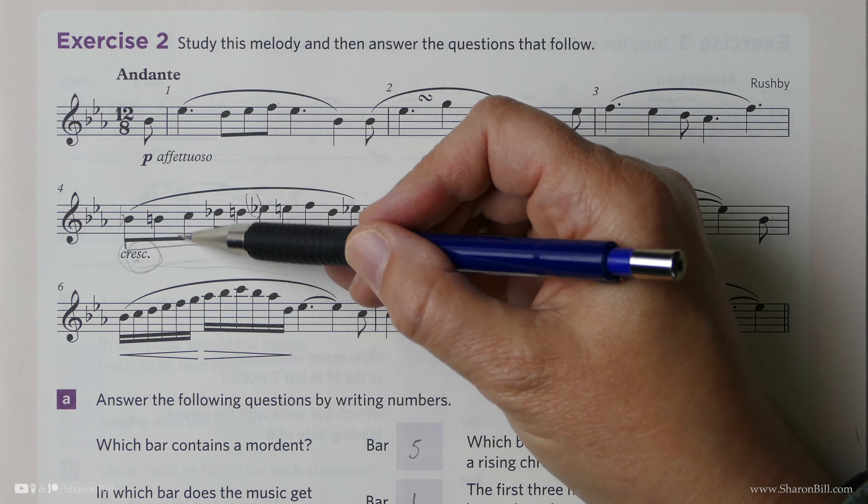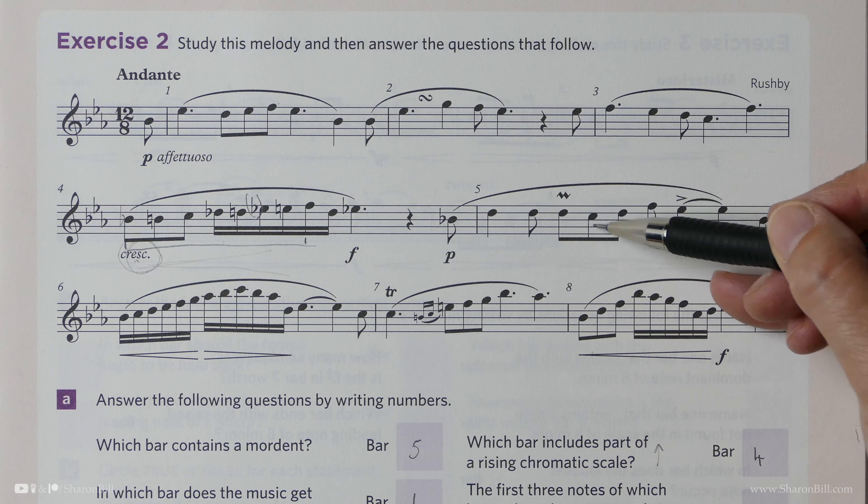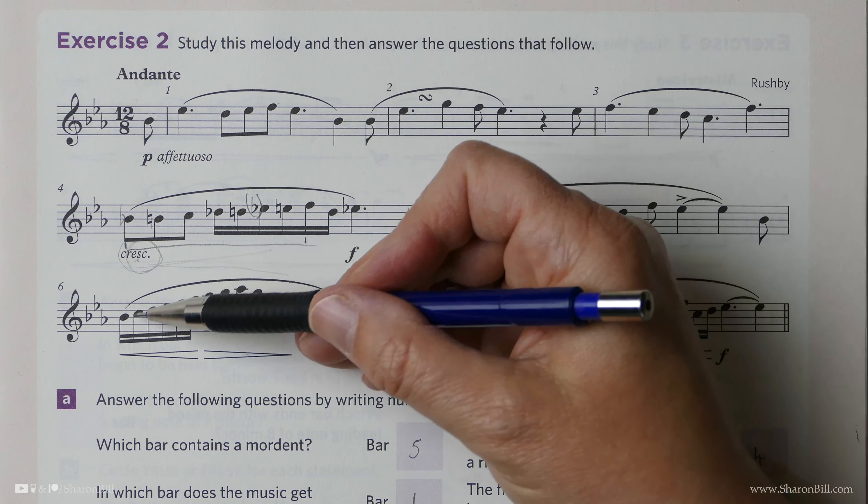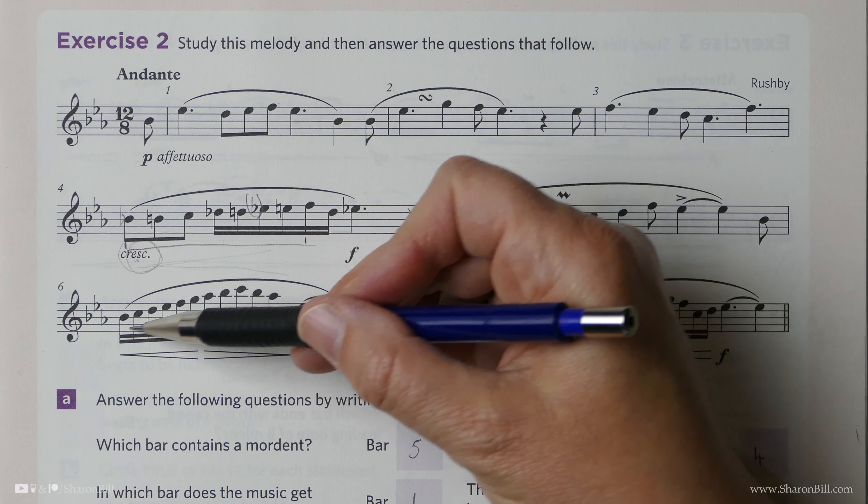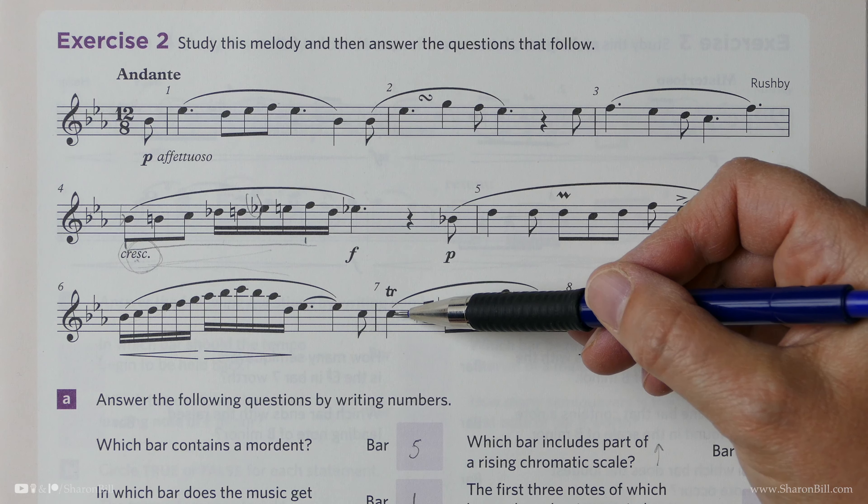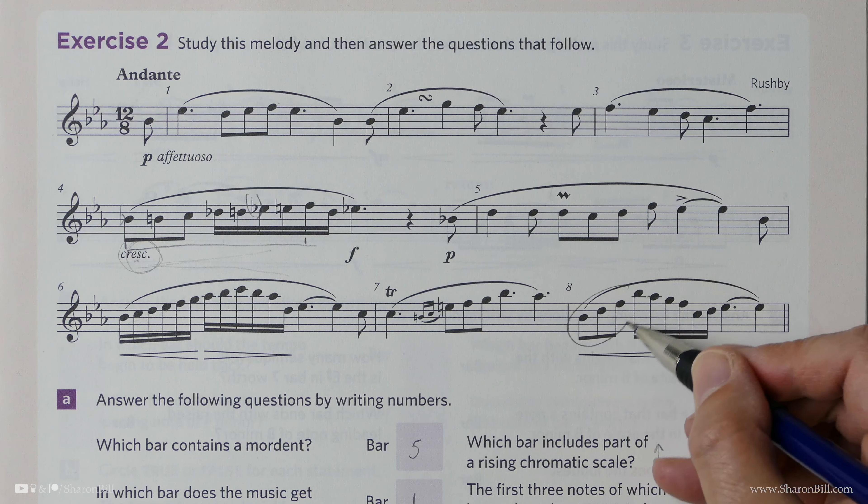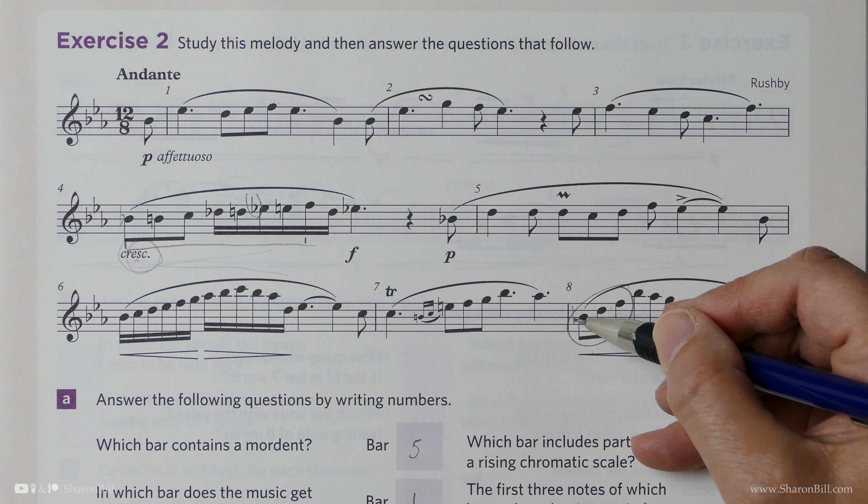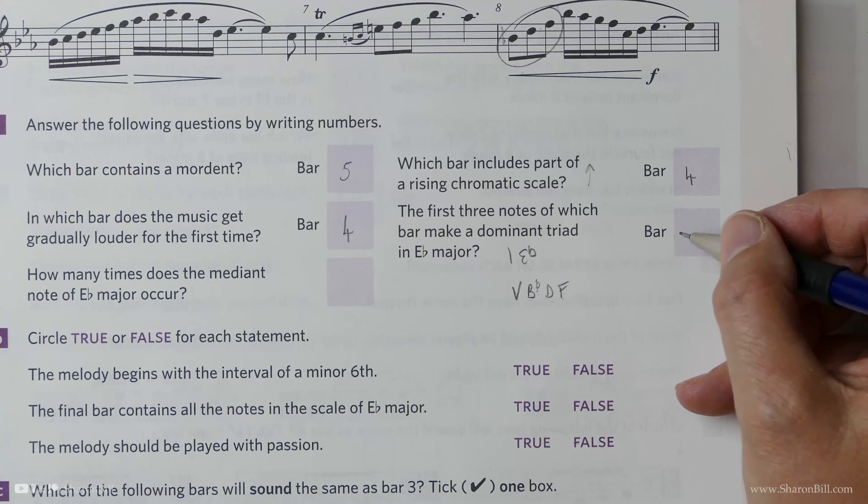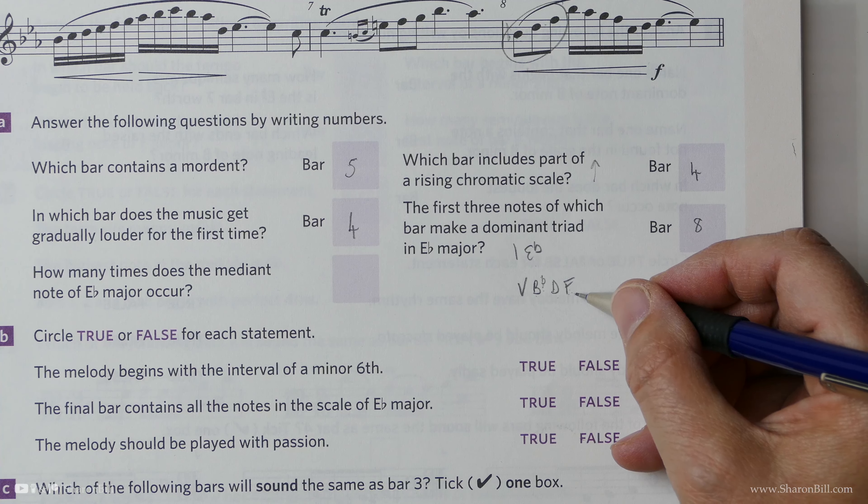That's the chromatic scale. We have a D, D, D. That's not the first three notes making the triad, is it? That's just part of the triad. That's definitely not a triad. They're going in step. That starts with a C. That's not correct. Here we go. Right at the very end, B, D, F. That, of course, is a B-flat because of the key signature. So right at the very end, the last bar begins with the first three notes of the dominant triad of E-flat major.